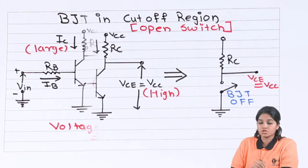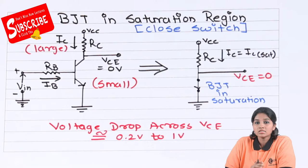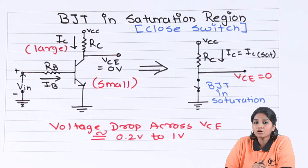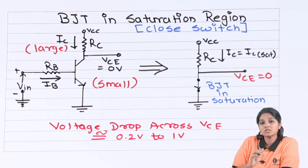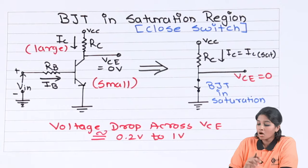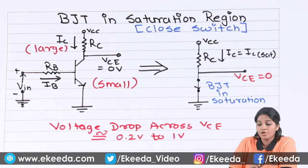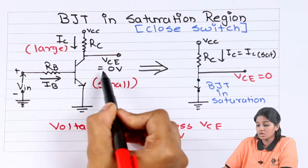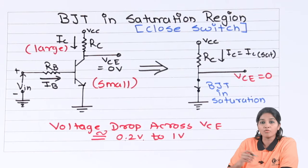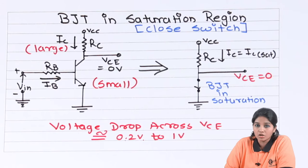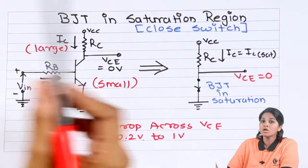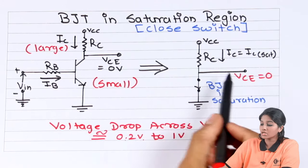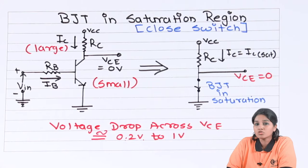Now let's see how the BJT operates as a closed switch. To operate the BJT as a closed switch, we need to consider it in the saturation region. In saturation region, when a positive pulse is applied to the base terminal of the transistor, a large amount of base current starts flowing through it, and that large base current drives the transistor into saturation. In saturation region, both the base-emitter junction and the collector-emitter junction become forward biased. A very large amount of collector current flows through the transistor. Therefore, the voltage drop across the collector-emitter junction is equal to 0V, or practically it is equal to 0.2V or 1V, depending on what type of transistor we are using and the value of collector current. As the collector current is very large, when the transistor operates in saturation region, it gets saturated and acts as a closed switch.